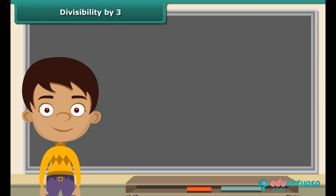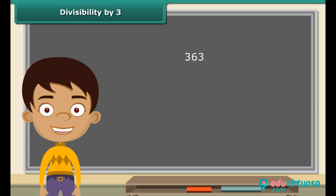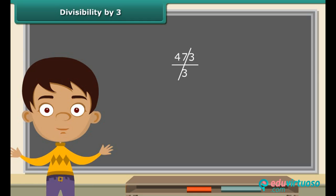We cannot apply a similar rule to check whether a number is divisible by three or not. Thirty-three ends with three; when divided by three it leaves a remainder of zero. However, four hundred seventy-three also ends with three, but when divided by three it leaves a remainder of two. Therefore four hundred seventy-three is not divisible by three. Quite clearly, the rules for checking divisibility by three are different.